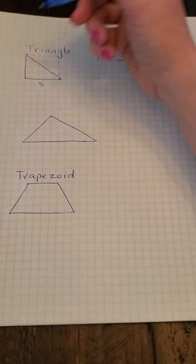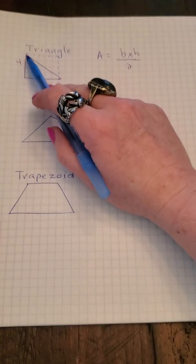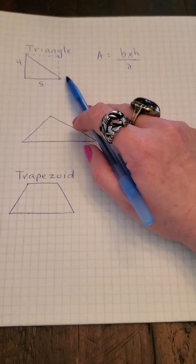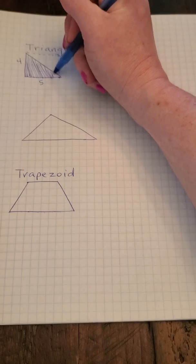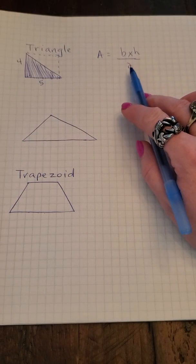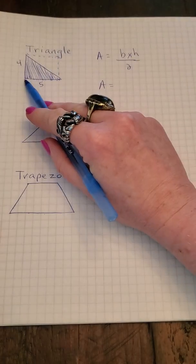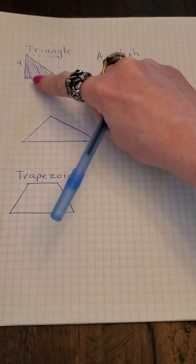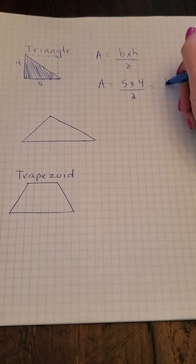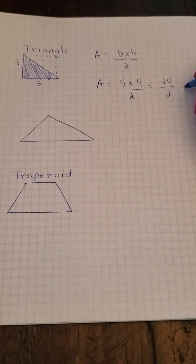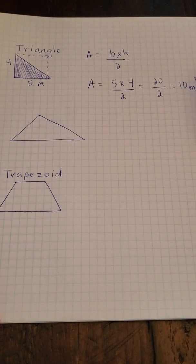It has five on the bottom and four on the side, so it's a rectangle. If you just cut it in half, you get the triangle. A triangle is half of a rectangle, so use the same formula but divide by two because you have two triangles in a rectangle. Area equals base times height divided by two. The base is five, the height is four. Five times four is 20, divide by two, equals 10 meters squared.